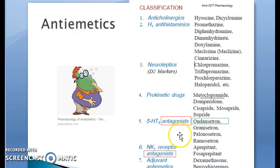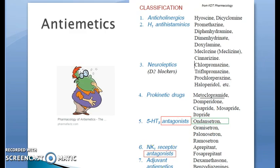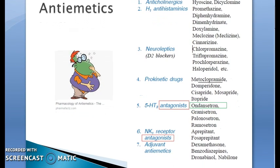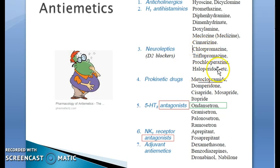You have serotonin antagonists like ondansetron, which is prescribed very frequently — 5HT3 antagonists. Then you have NK1 receptor antagonists. Then adjuvant anti-emetics like benzodiazepines. Chlorpromazine and haloperidol are not preferred as anti-emetics because of their extrapyramidal side effects.